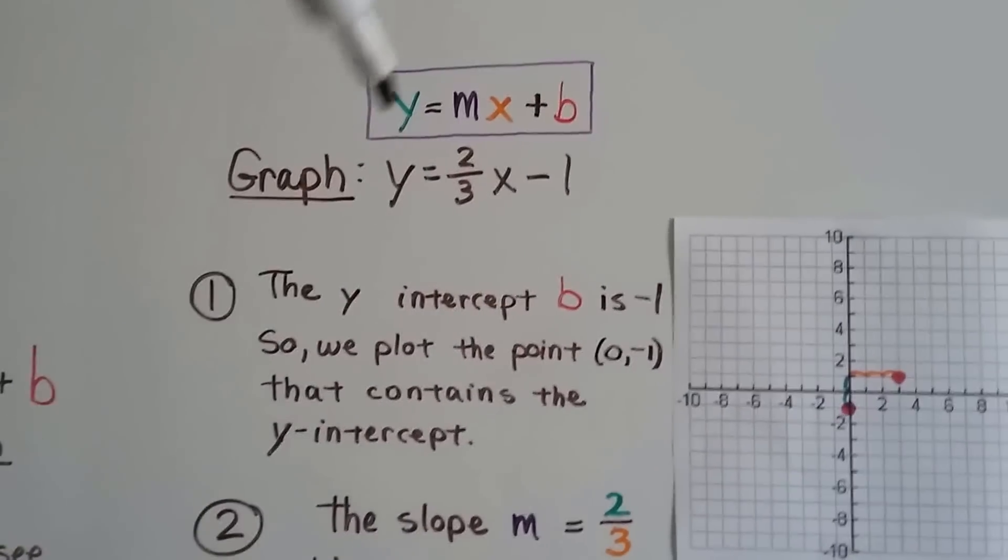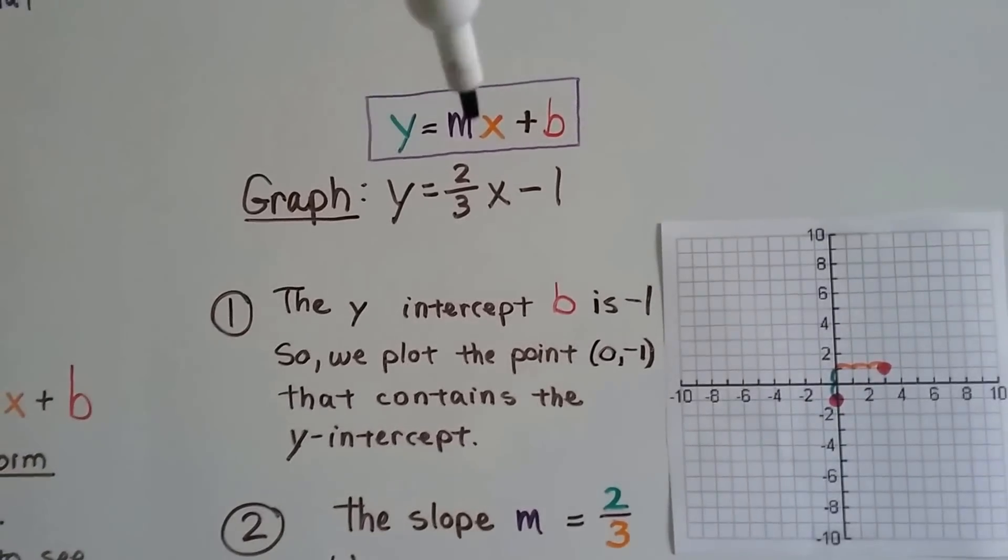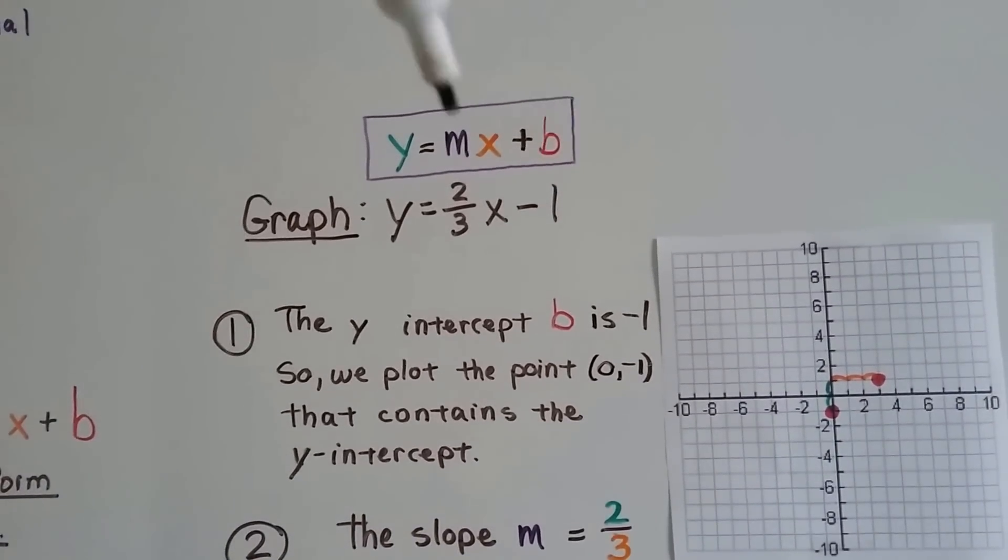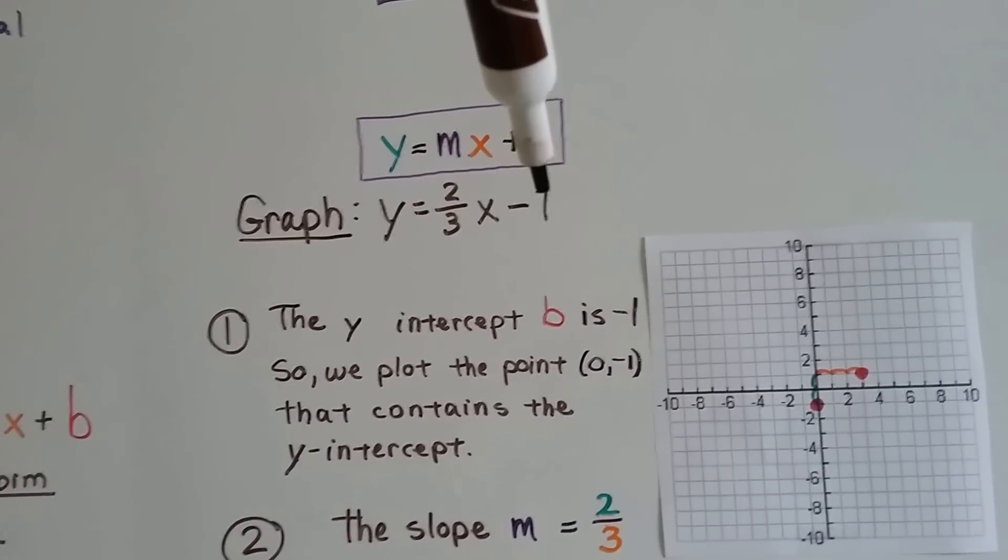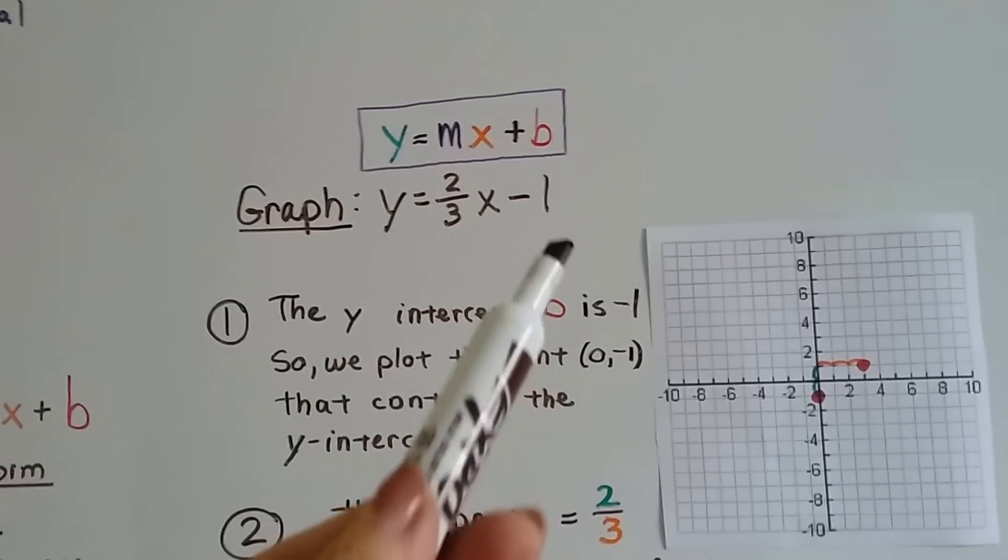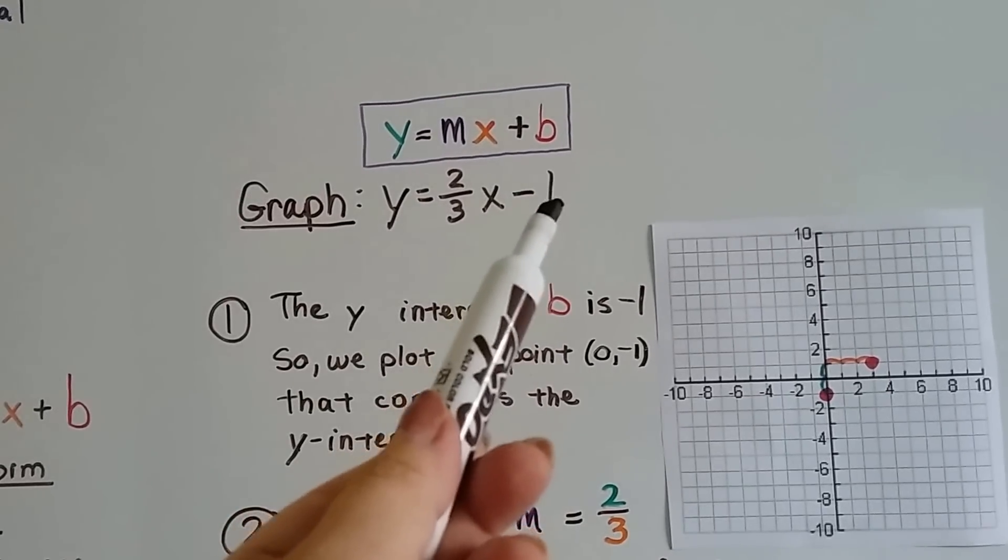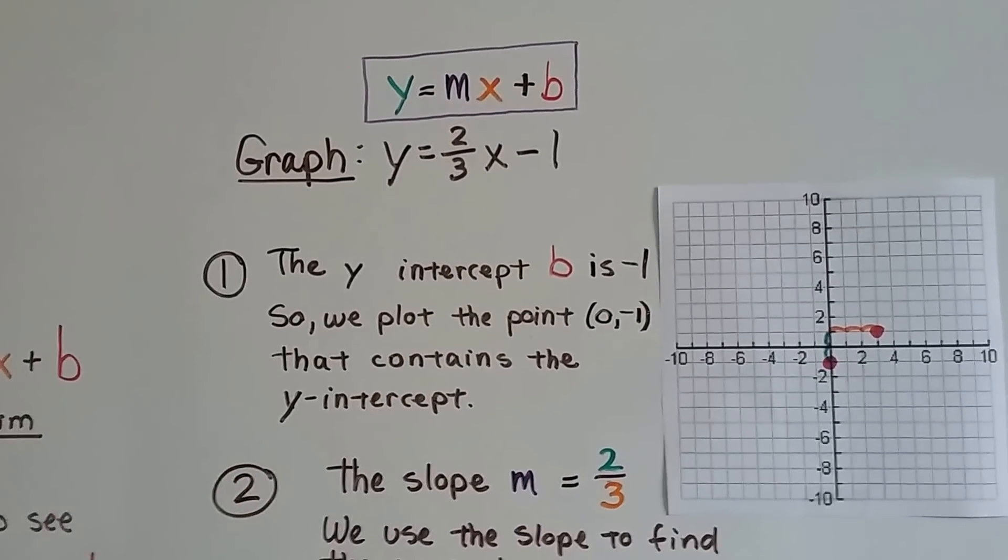So I wrote the slope-intercept form up here, so you can compare it to our equation we've got down here. So we can see 2 thirds is our slope, and we can see b is a negative 1. So remember, we're going to set x to 0 and use negative 1. That's our intercept.